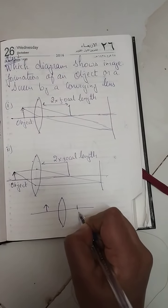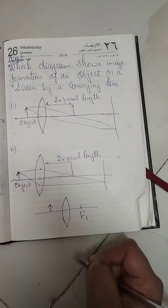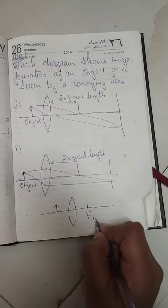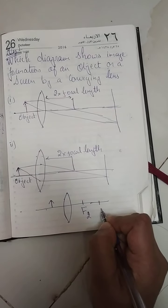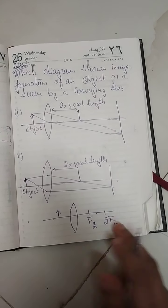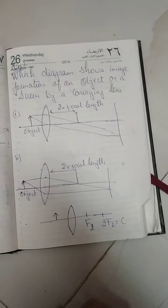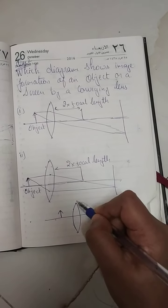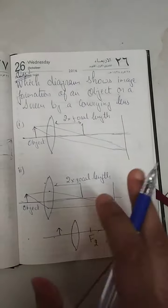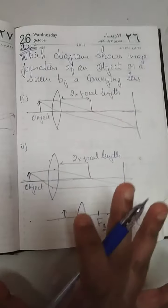This side you write f2 and 2f2. What do you mean by 2f2? Twice the focal length - this is your center of curvature on this side. These are like two mirrors.